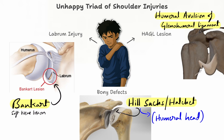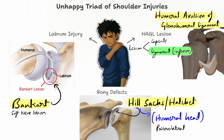Hill-Sachs or Hatchet's deformity is not a soft tissue lesion — it is a bony defect, a bony depression mostly on the posterolateral side. HAGL (humeral avulsion of glenohumeral ligament) is a lesion on the capsule and ligaments, specifically the inferior glenohumeral ligament, which is the most commonly involved of the three glenohumeral ligaments.